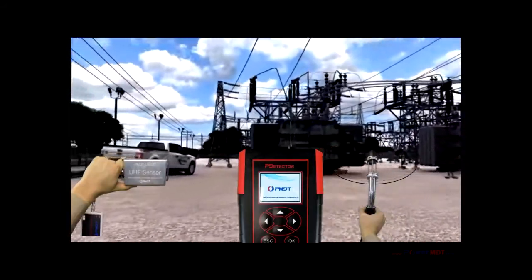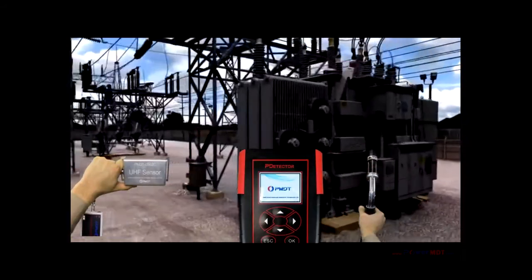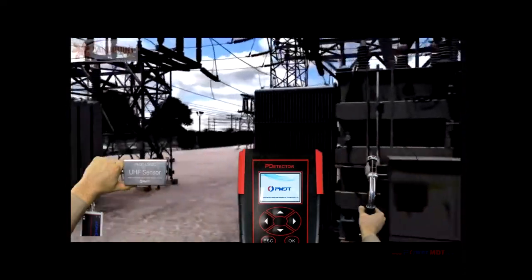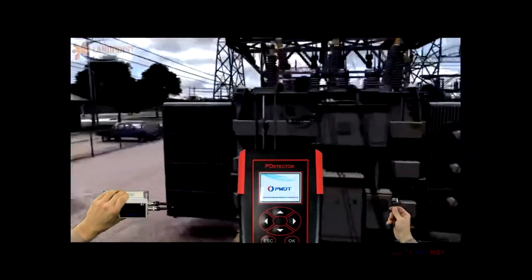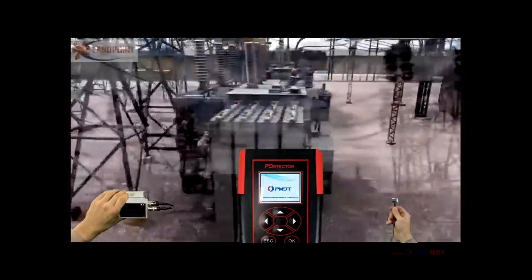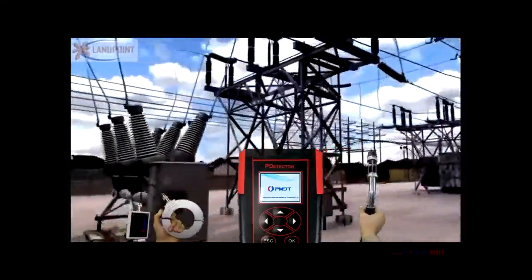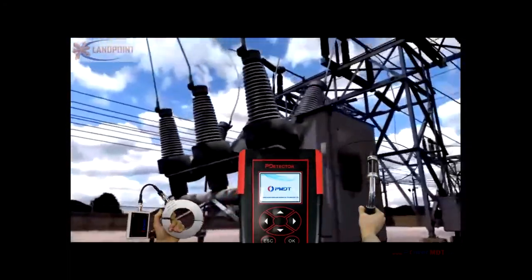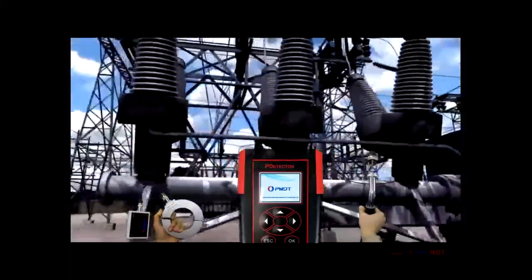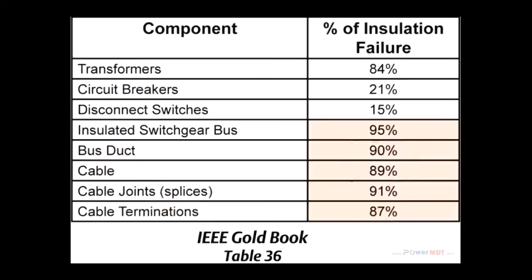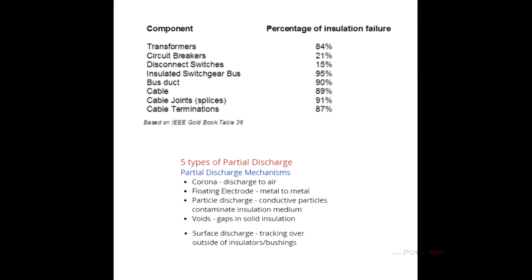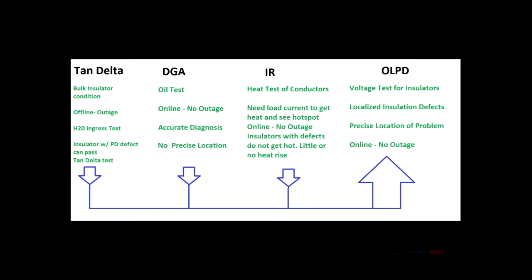Online PD testing is a pre-outage insulation inspection which is performed on live, energized, medium or high-voltage power equipment without a service interruption or outage. According to the IEEE Gold Book, insulation failure is the cause of 80% of power equipment failures. Online PD testing provides valuable information about insulation condition even when there is no opportunity for an outage to perform conventional tests.